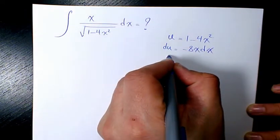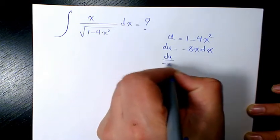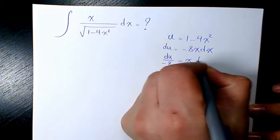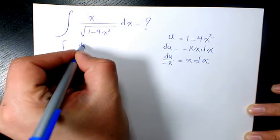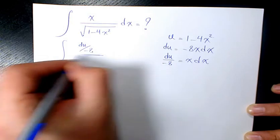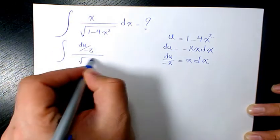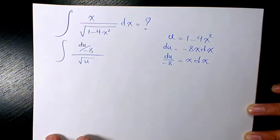We can say du over negative 8 is going to be x dx. So we see it here, x dx in here, so it's going to be du over negative 8 divided by square root of u.